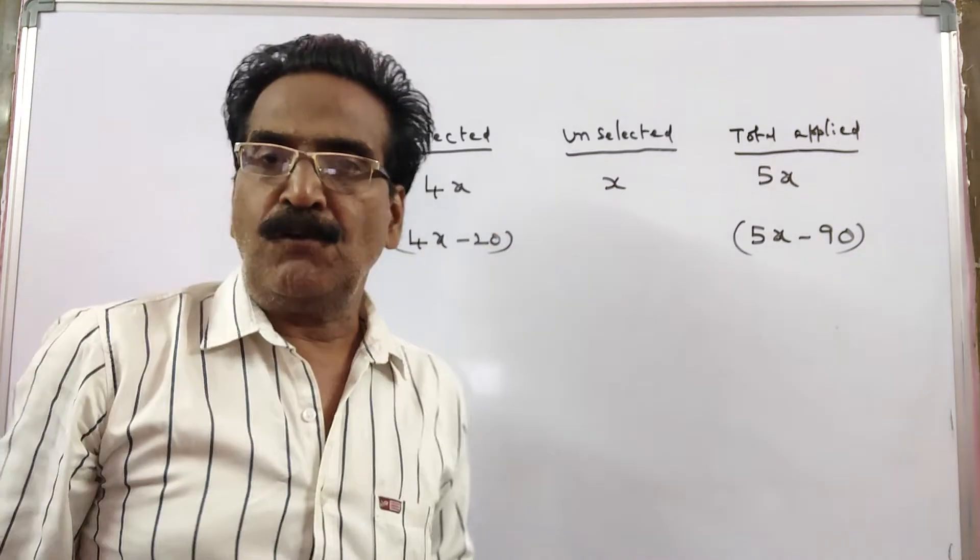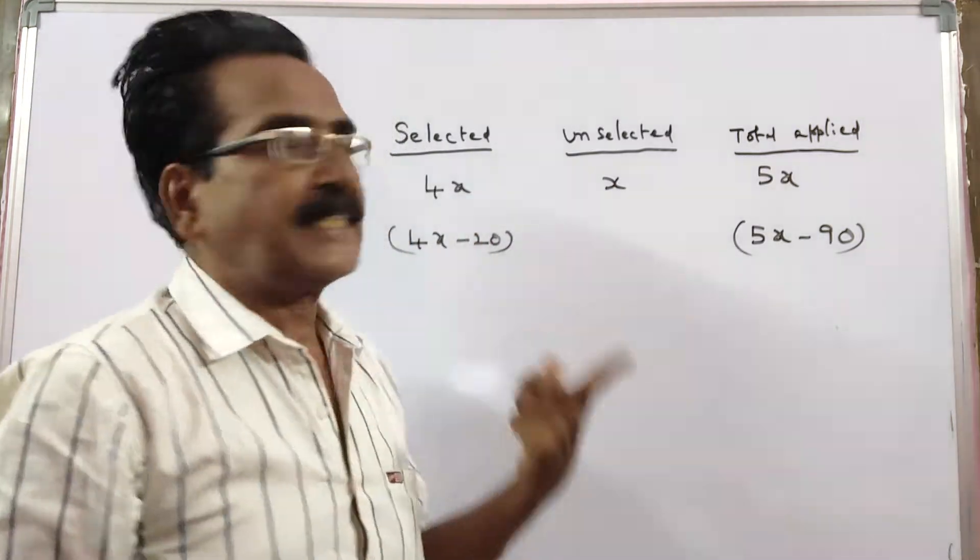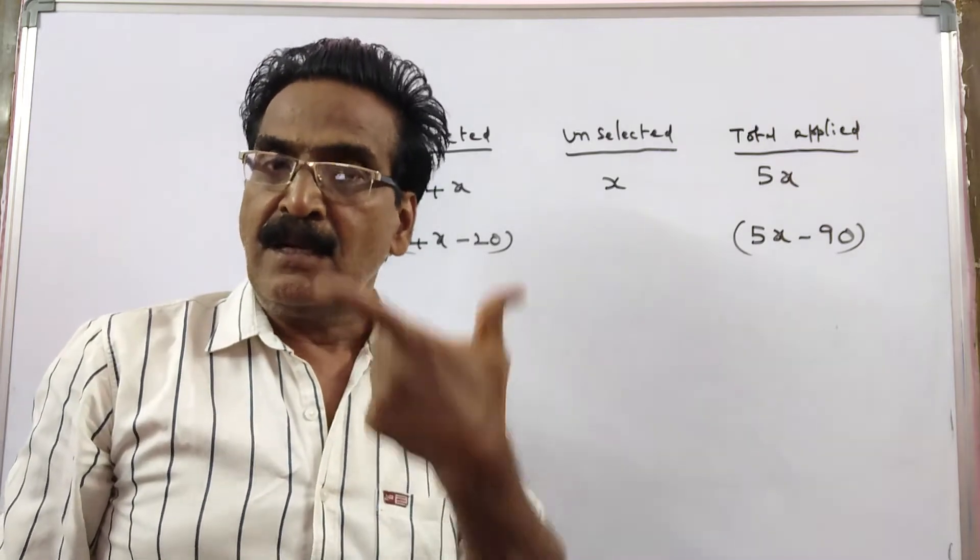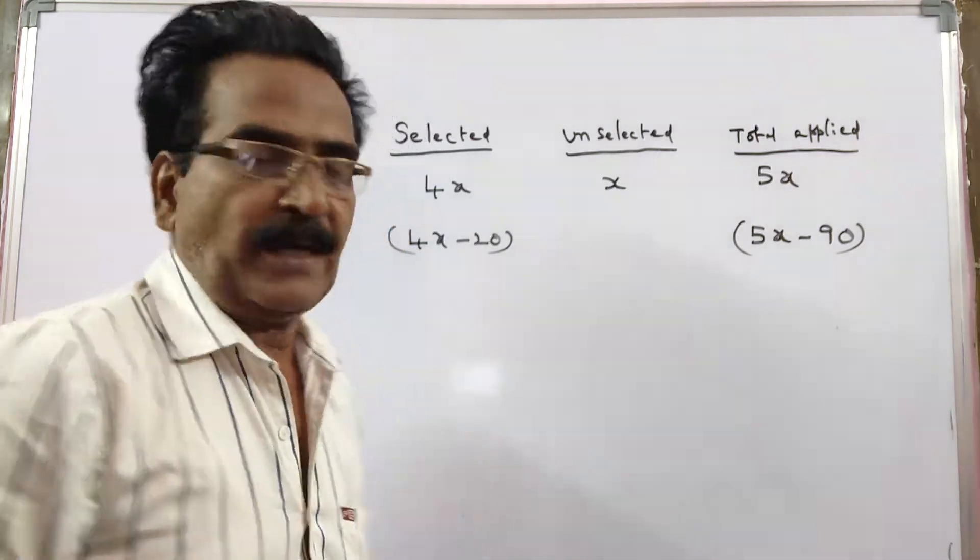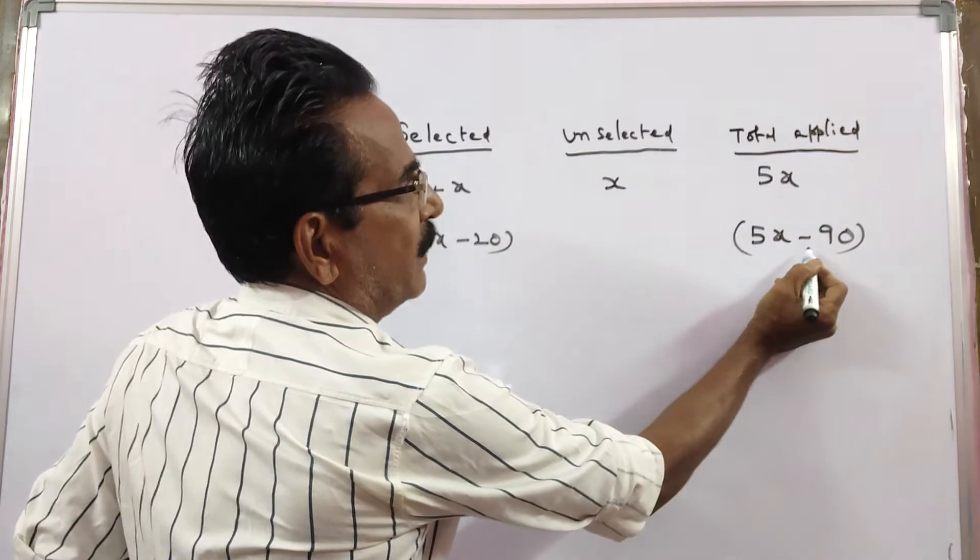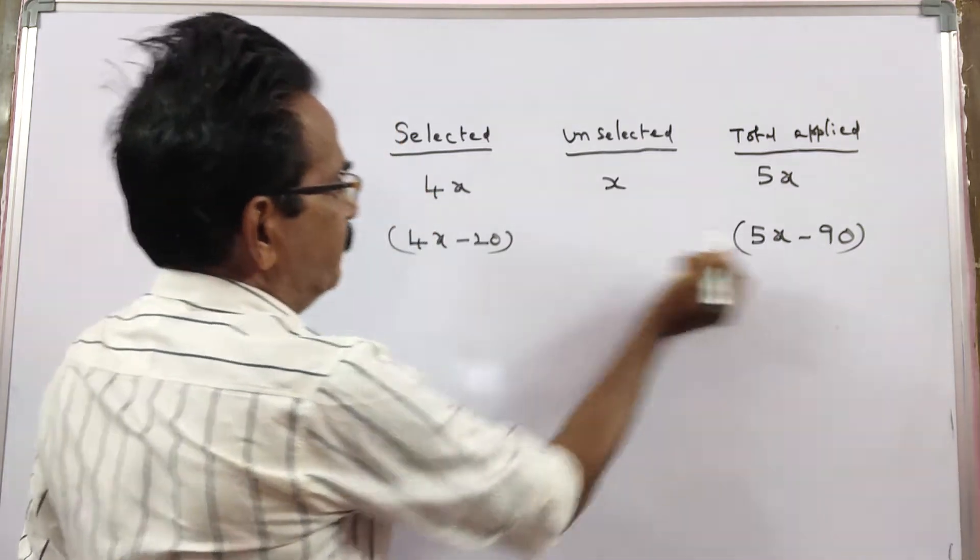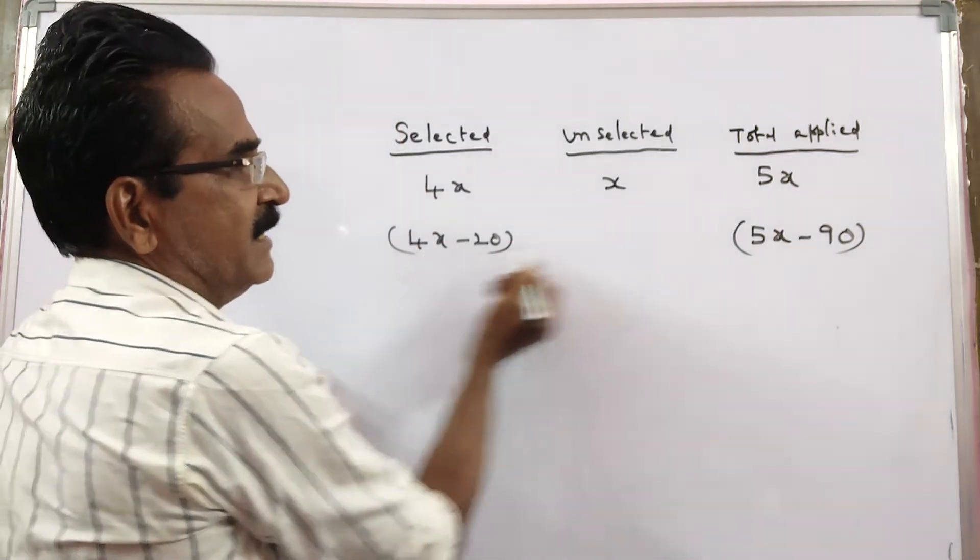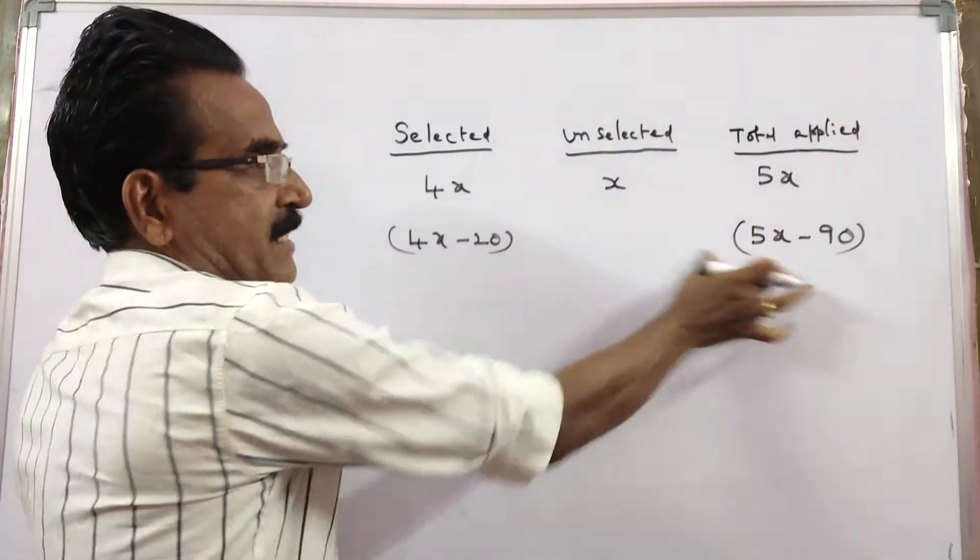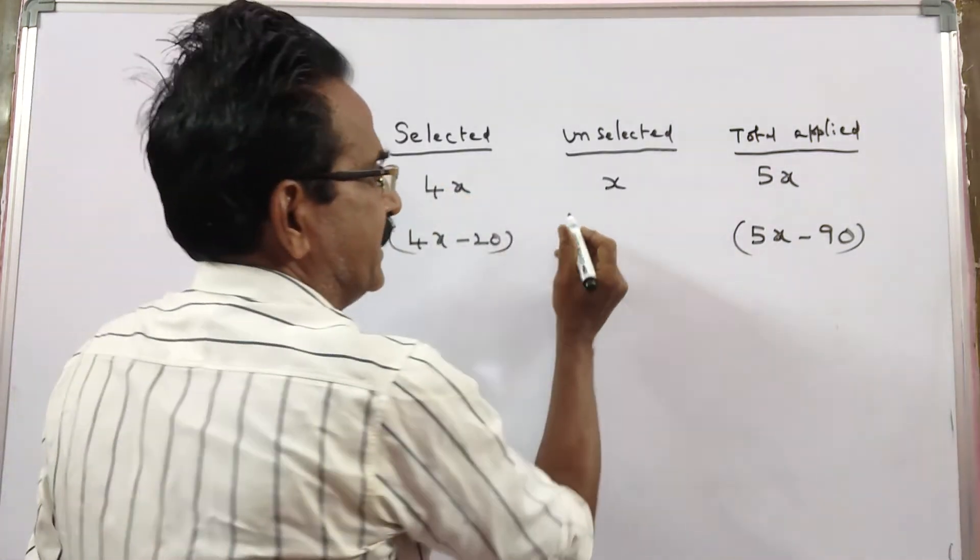Then the ratio would have been, the ratio of selected and unselected would have been 5 is to 1. So this is total number of candidates applied. This is selected, and this minus this gives unselected.